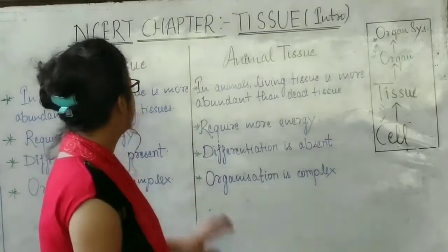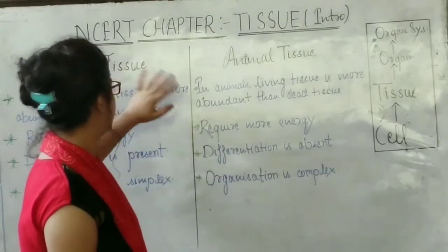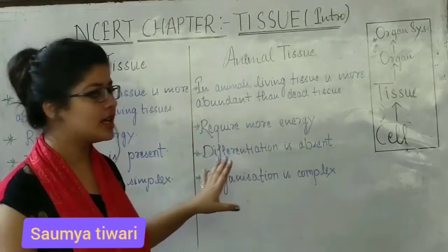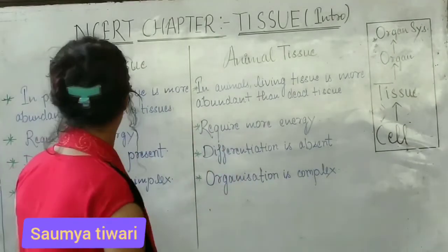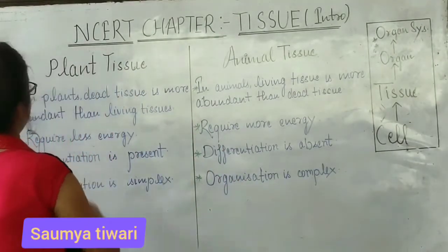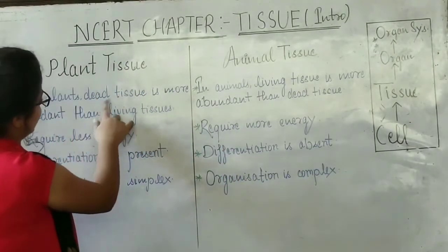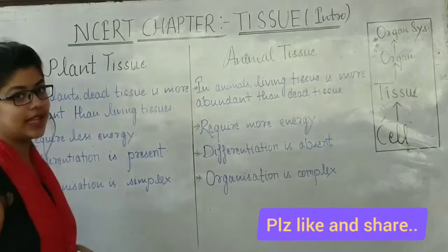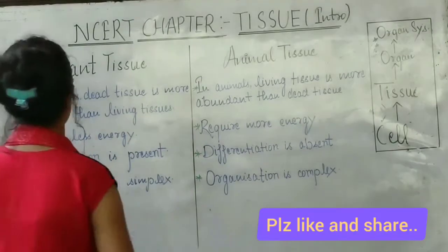Now we will study the difference between animal tissue and plant tissue. First point: in plant tissue, dead tissue is more abundant than in animal tissue.